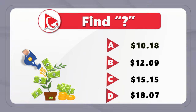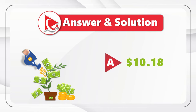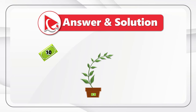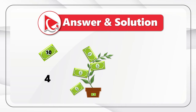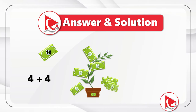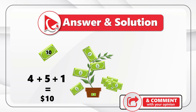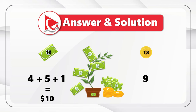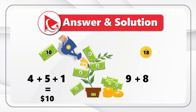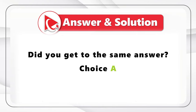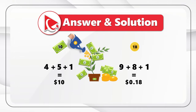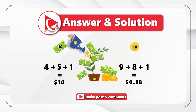The correct answer here is choice A — $10.18. I counted $10 in the picture. Starting from the top of the money tree, there are four dollar bills. Then on the right we see another group of dollar bills — there are five dollars there. And then we see a hard-to-notice dollar bill on the top of the flower pot. Now for the coins: there are nine coins to the right of the flower, eight coins coming out of the watering can, and one coin on top of the watering can which is easy to miss. If you got a different answer, please post it in the comments.